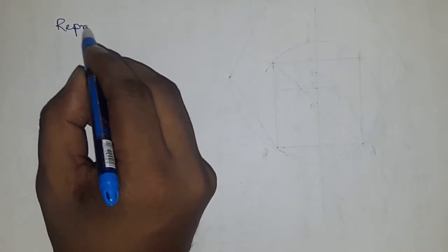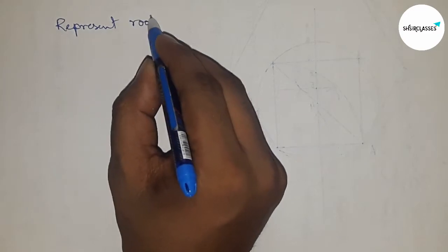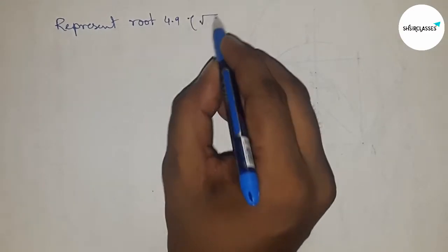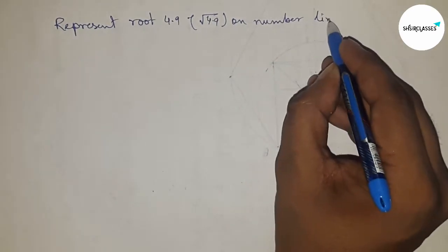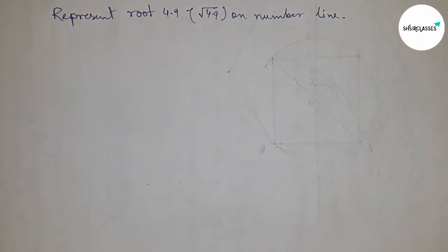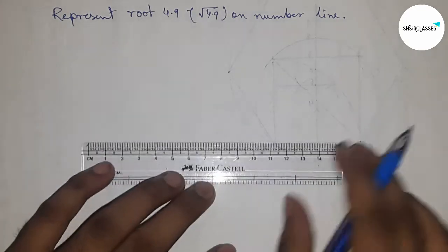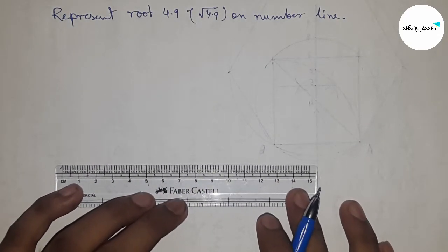Hi everyone, welcome to SSL Classes. Today we're talking about the representation of root 4.9 on the number line. Before starting the video, please subscribe to the channel and press the bell icon.